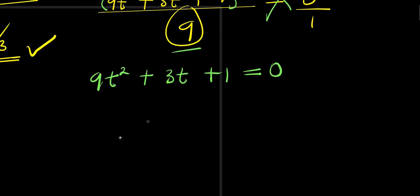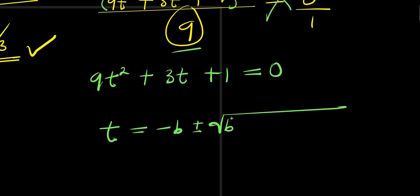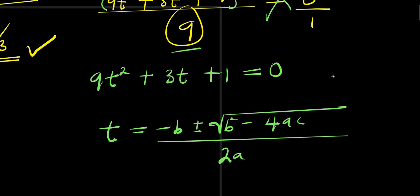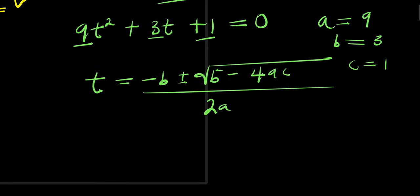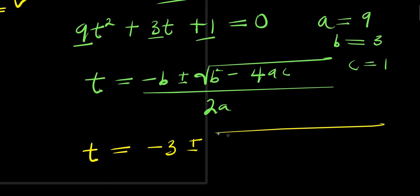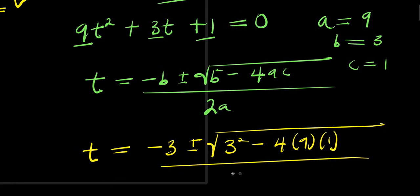So let's solve this using the quadratic formula. t equals negative b plus or minus square root of b squared minus 4 times ac, divided by 2a. Here a equals 9 — the coefficient of t squared — b equals 3, and c equals 1. So we have t equals negative 3 plus or minus square root of 3 squared minus 4 times 9 times 1, divided by 2 times 9.